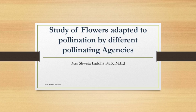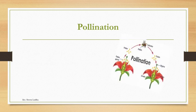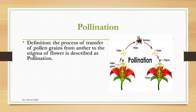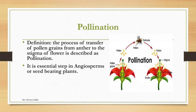Students, let us start with the next practical. We are going to study flowers and how they are adapted to different modes of pollination through different pollinating agencies. The detail explanation is given on page number 79. Pollination is a process where transfer of pollen grains takes place from the anther to the stigma of the flower. Pollination is an important step in angiosperms or seed-bearing plants.